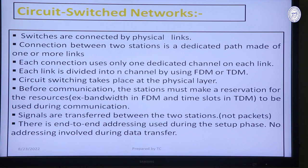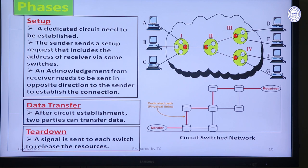Before communication, a connection must be created between sender and receiver. During circuit establishment and data communication, all resources must be reserved — such as FDM bandwidth, TDM time slots, switch buffer, switch input and output ports, and switch processing time. There is no addressing during the data transfer phase because end-to-end addressing is handled at the circuit establishment phase. Circuit switching goes through three phases: setup phase, data transfer phase, and teardown phase.